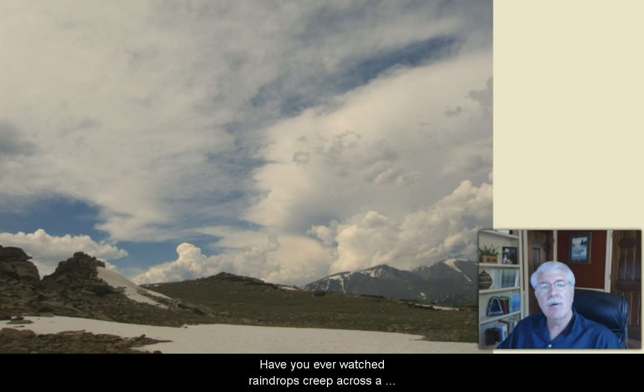Have you ever watched raindrops creep across a window? When the droplets get close to each other, they join to form one larger drop. Water molecules cling to other things too. This clinginess allows water to move up plant roots and enables blood to flow through tiny blood vessels.